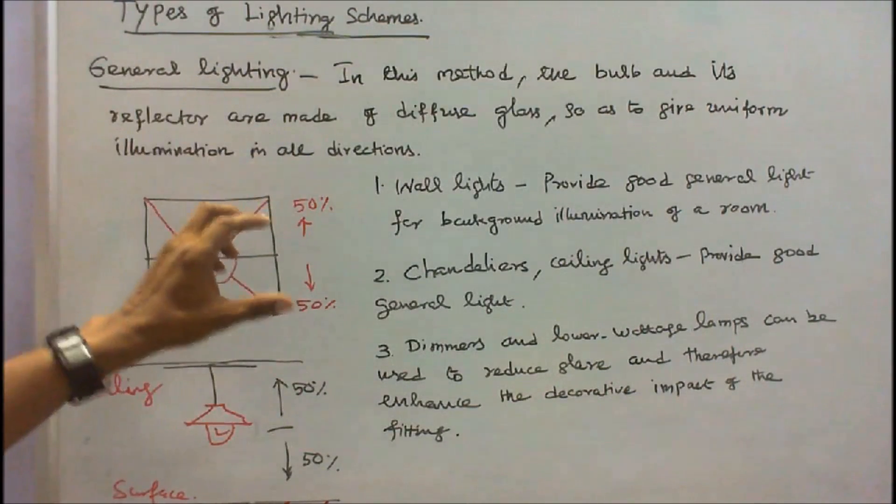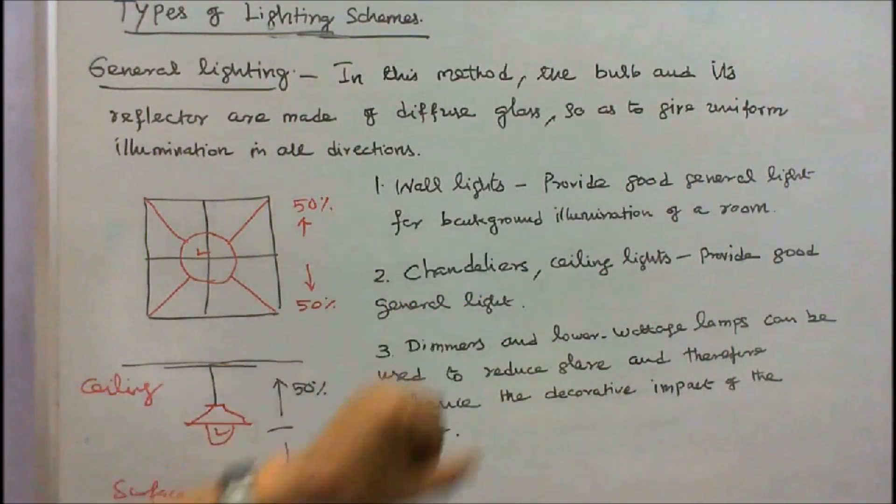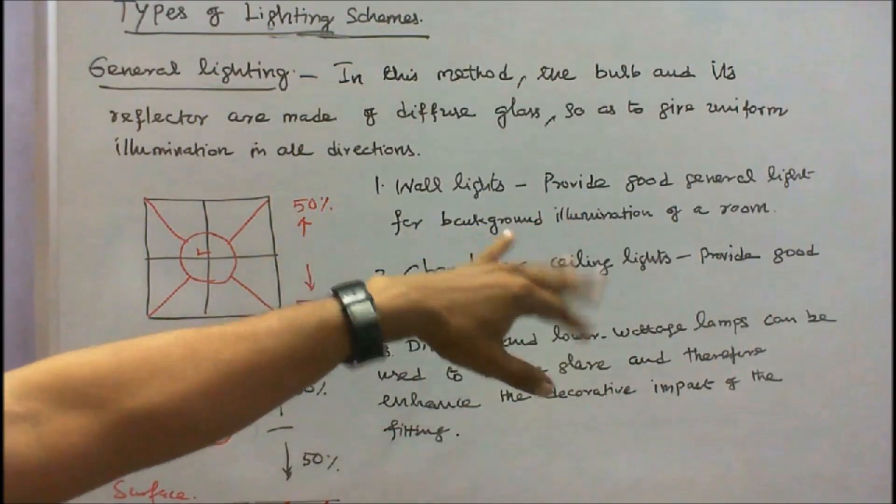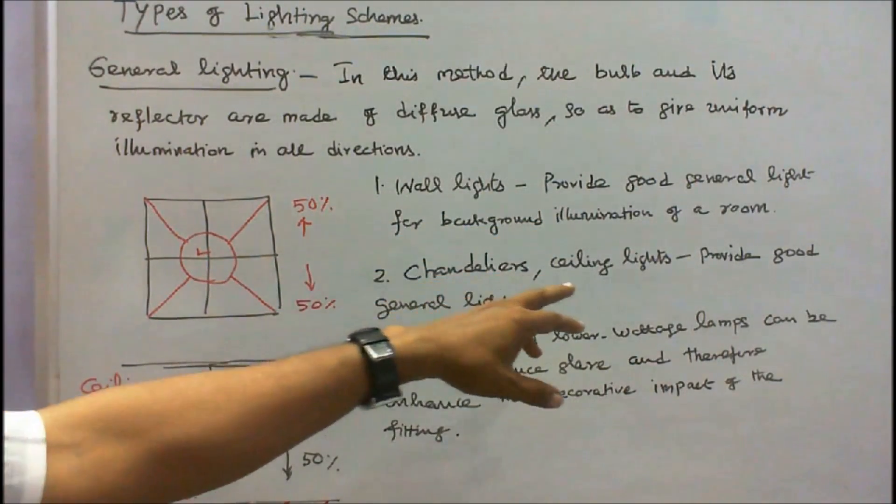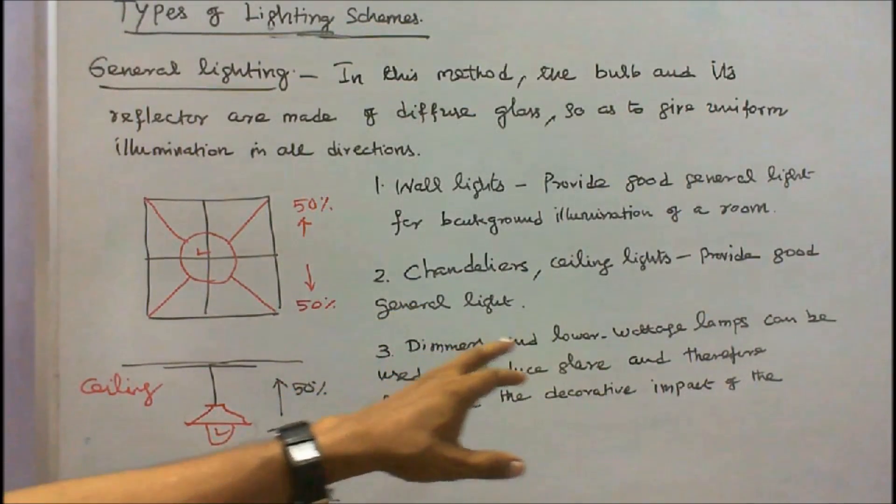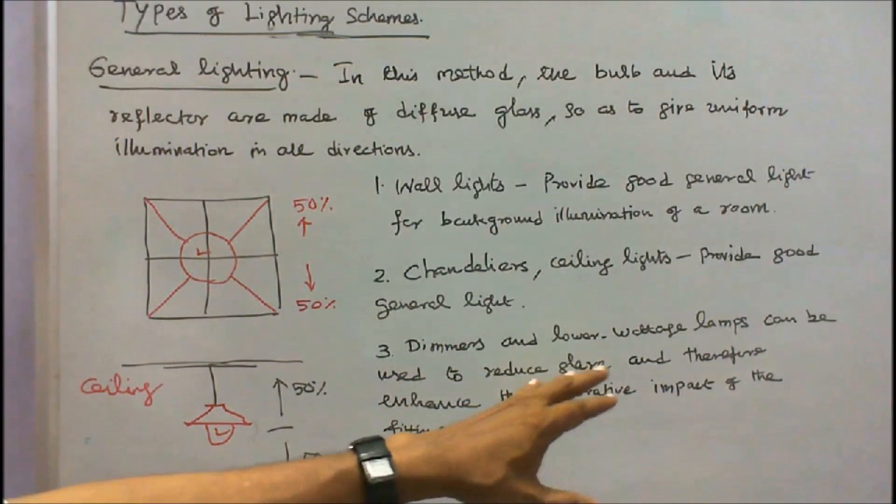The best examples for general lighting are wall lights, chandelier ceiling lights. Wall lights provide good general lighting for bathroom illumination of a room. Chandelier ceiling lights provide good general lighting. Number three, dimmers and lower wattage lamps can be used to reduce glare and therefore enhance the decorative impact of the fitting.